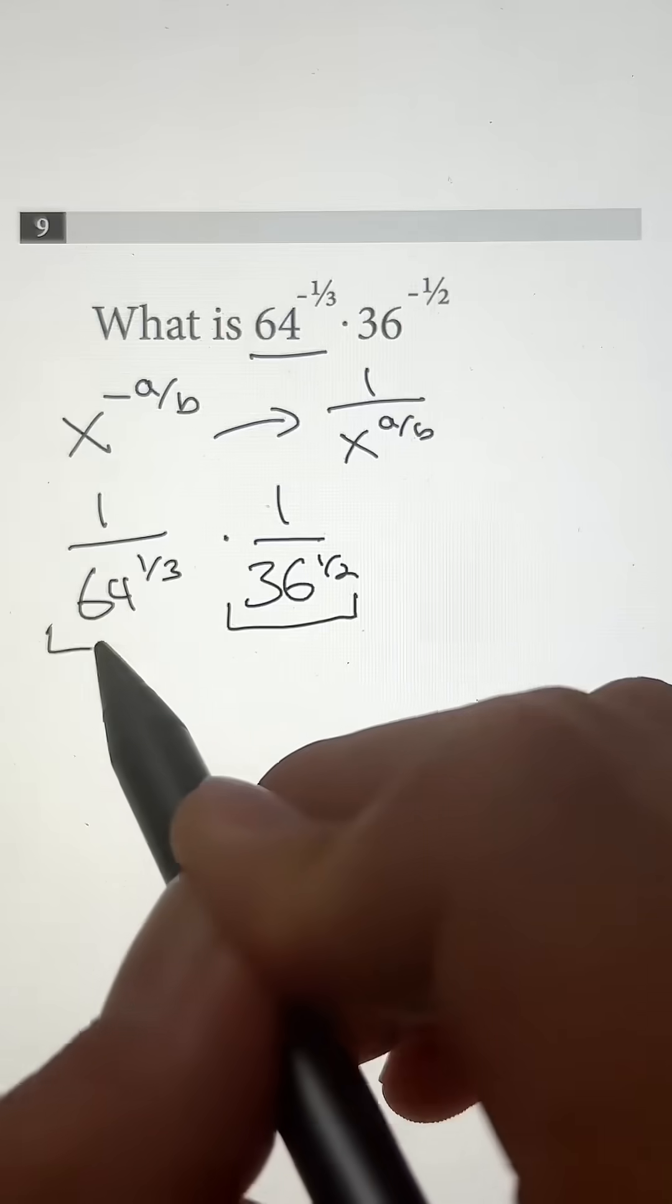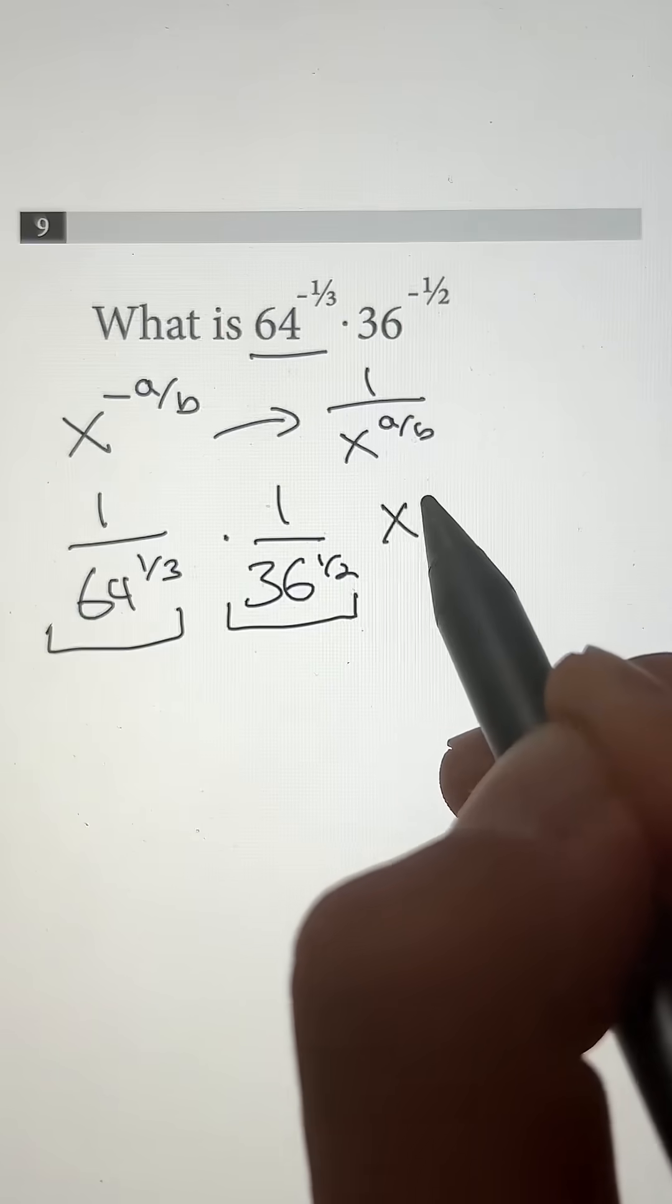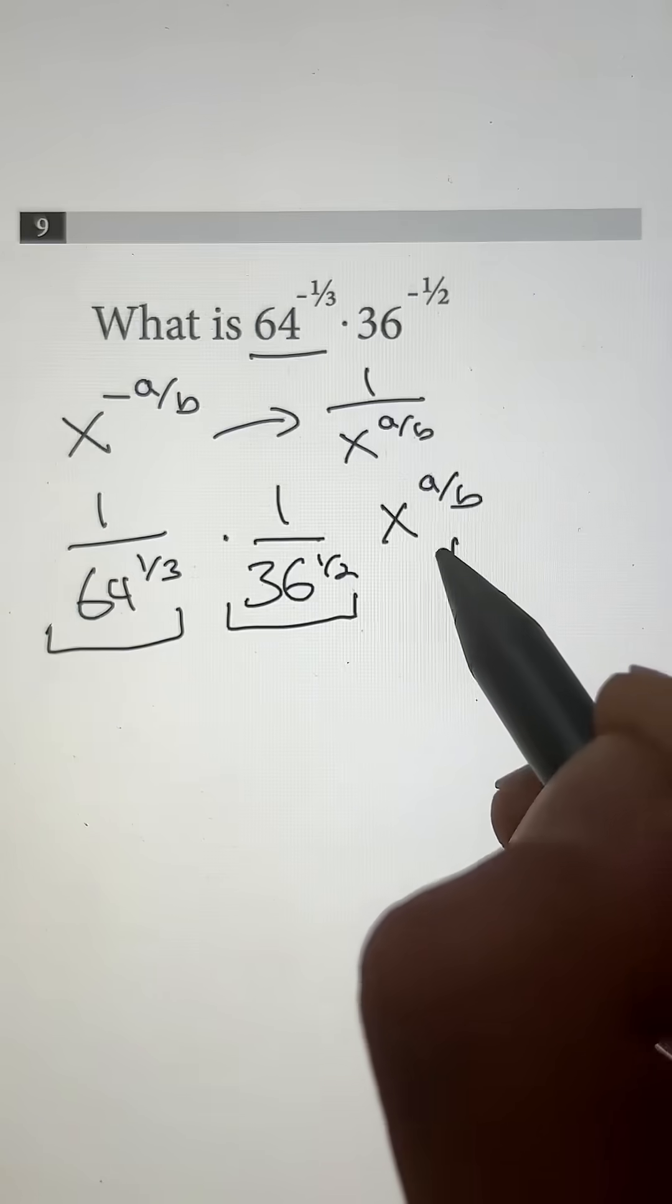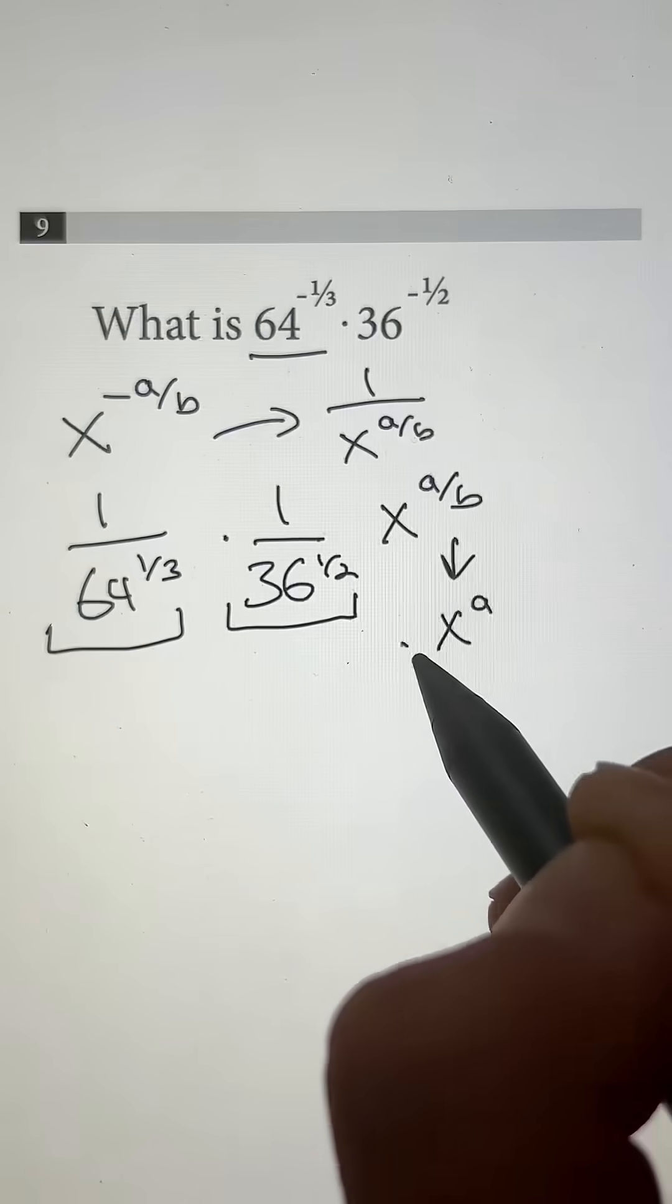And if you look at the denominator for these two fractions, they're in what we call x to the a divided by b form. And that just turns into x to the a power with the root of b.